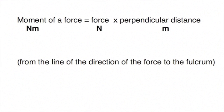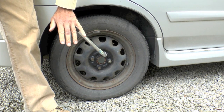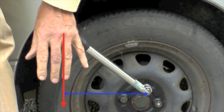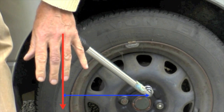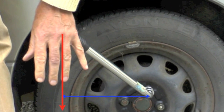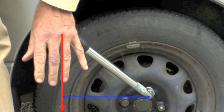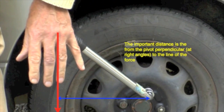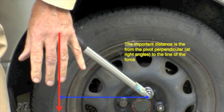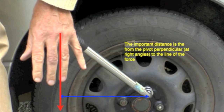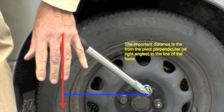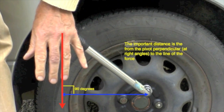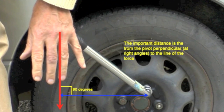In calculating the moment we use the phrase 'perpendicular distance' and we need to explain what that means. In this example the spanner has been repositioned so that it is at an angle facing upwards. The force being applied is still vertically downwards — in effect the length of the spanner has been reduced. The important distance is the one shown by the blue arrow from the pivot perpendicular to the line of the force. Perpendicular means at right angles, so the angle shown must be 90 degrees.